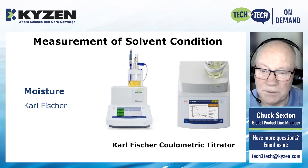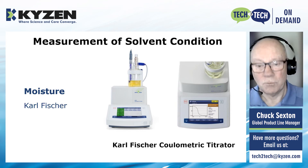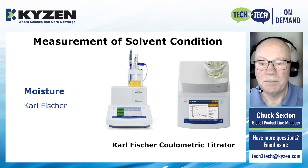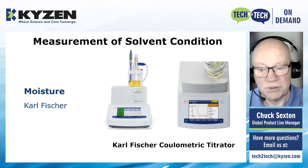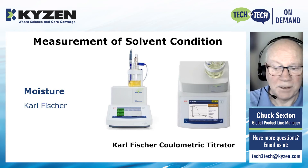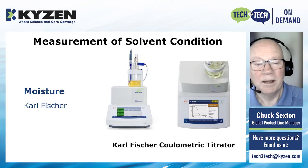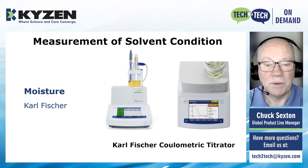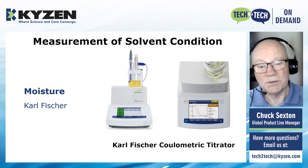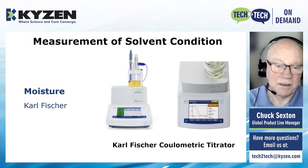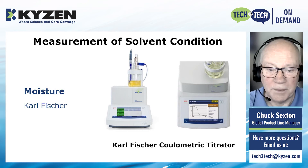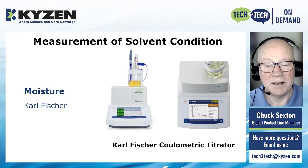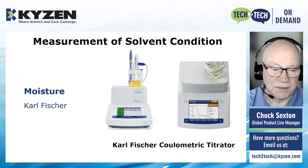Solvents generally have a problem when the moisture content reaches a certain level, because the solubility parameters of the solvent change, and often you'll stop cleaning well when moisture gets too high. This is straightforward. We have these instruments in our lab — most of you probably do not — and as your chemical supplier, we can help you for at least the first couple of months and thereafter when needed to stay on top of your process.